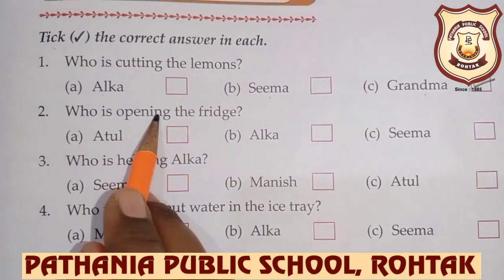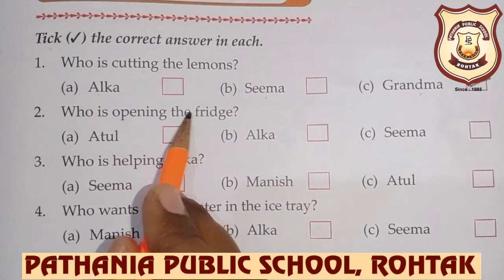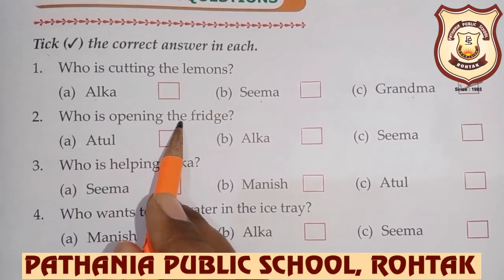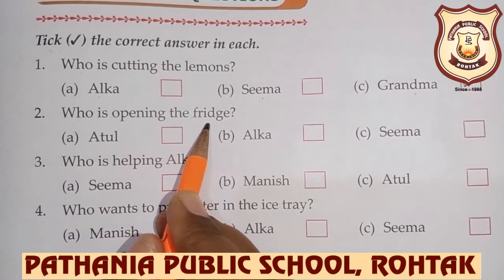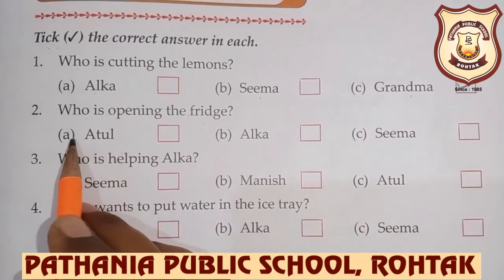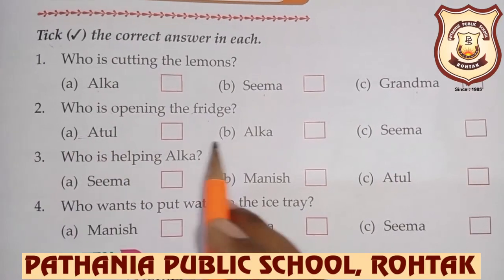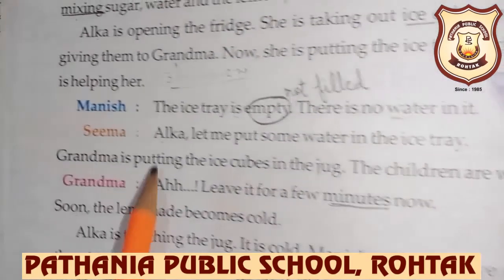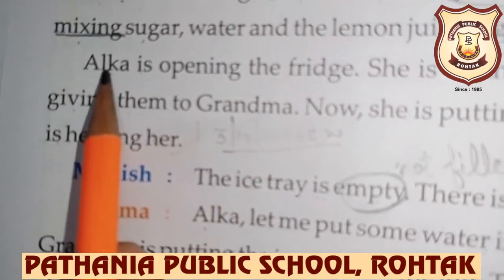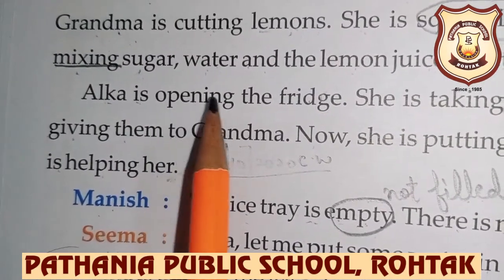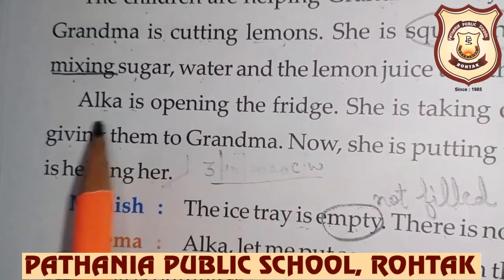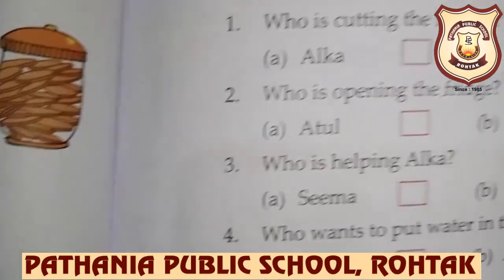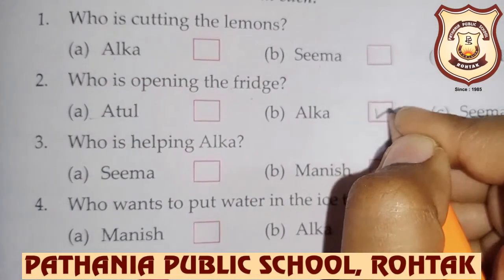Who is opening the fridge? Fridge ko open koon kar raha hai? A. Atul, B. Alka, C. Sima. Alka is opening the fridge. So who is opening the fridge? Alka. Tick on Alka.